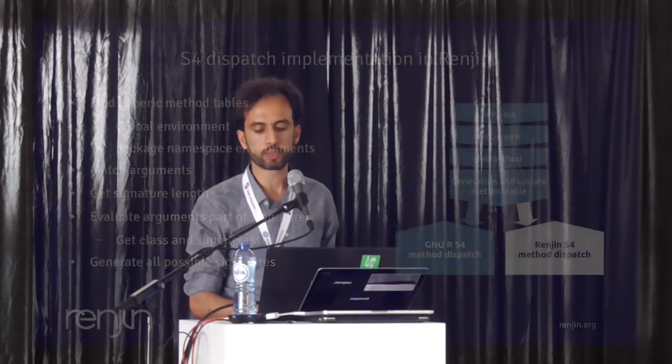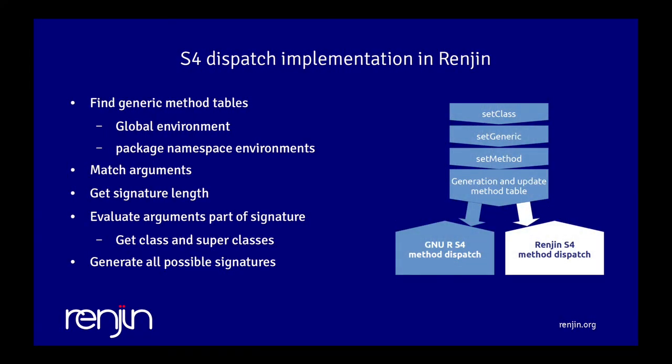So for us it's really important to be able to include this information in our JIT compiler. What we have done is we have implemented the method dispatch part of the S4 object system. Basically all the steps from creating classes, creating generics, methods, creating this method tables and signatures, everything is done by the R code in methods package. The only part that's different is that we have written our own Java implementation of the method dispatch, which works pretty the same way. We have tried to mimic the same way, although there are a lot of little issues that we have to resolve yet.